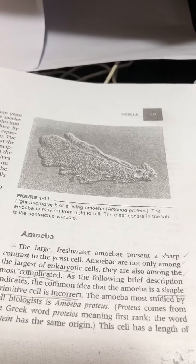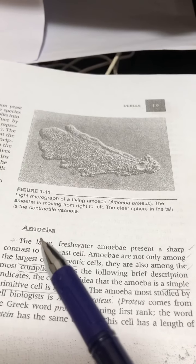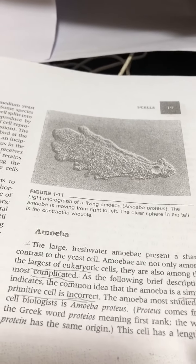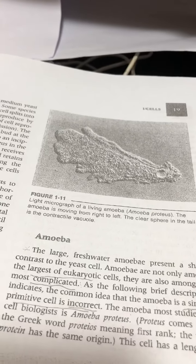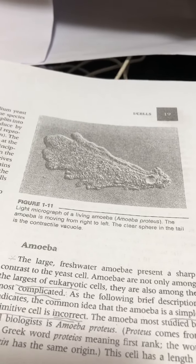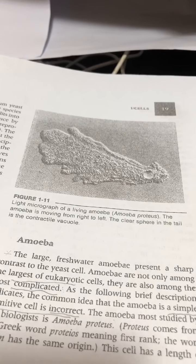The second example of unicellular eukaryotic cell is amoeba. Amoeba is a large freshwater amoeba, sometimes called a simple cell, and this is incorrect because the cell is a complicated cell.